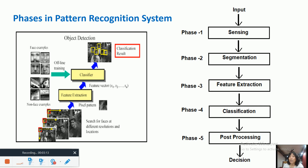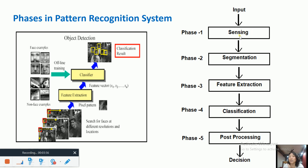Pattern recognition consists of five phases: phase one — sensing, phase two — segmentation, phase three — feature extraction, phase four — classification, and phase five — post-processing. Sensing is the process of perceiving data from the object for some classification purpose, and it can be done by transducers like cameras, microphones, and so on.